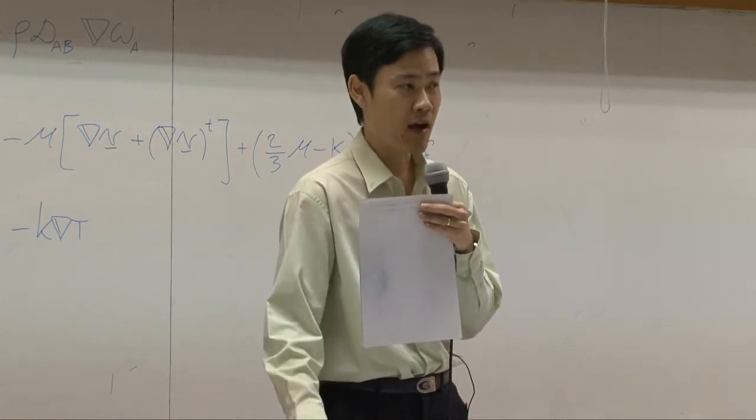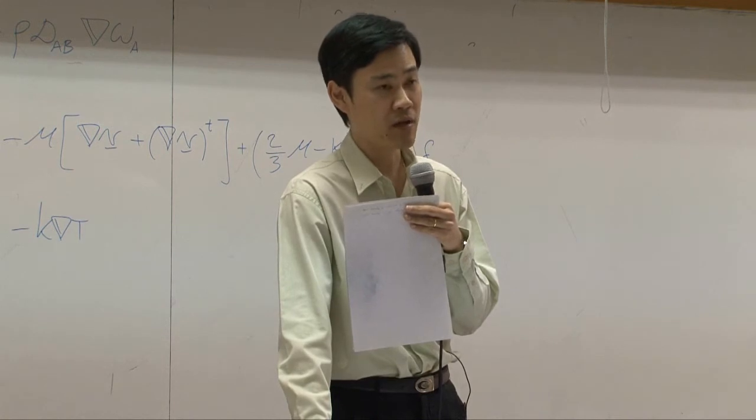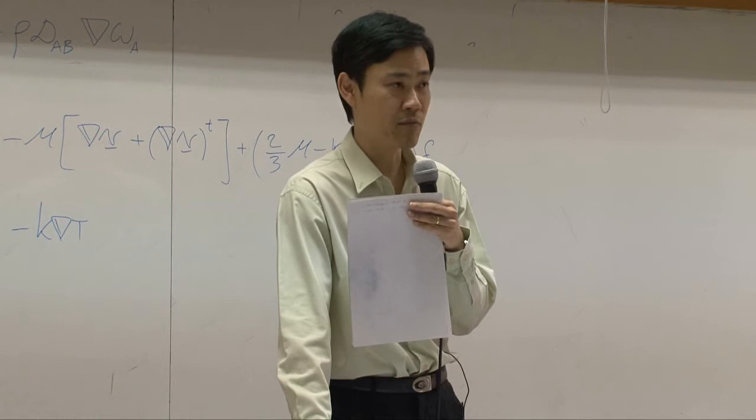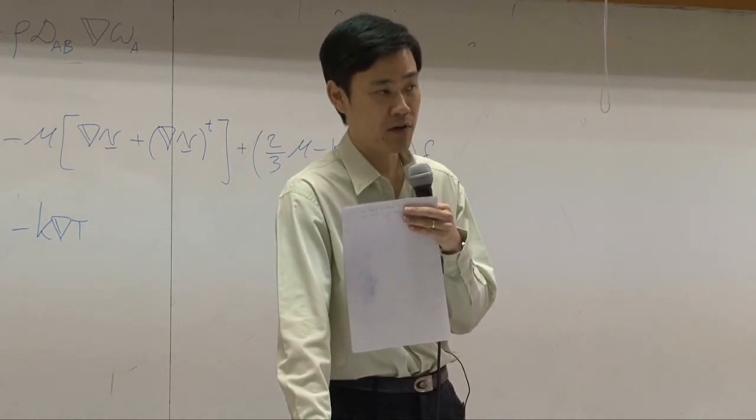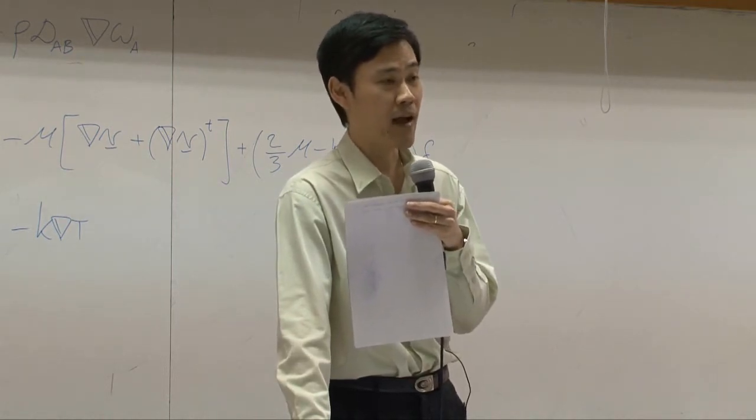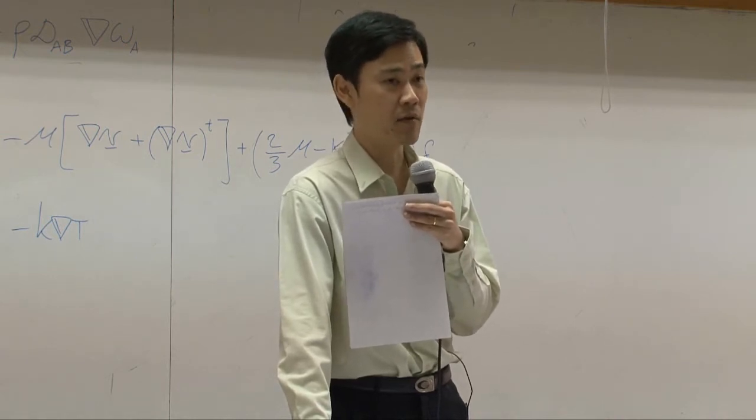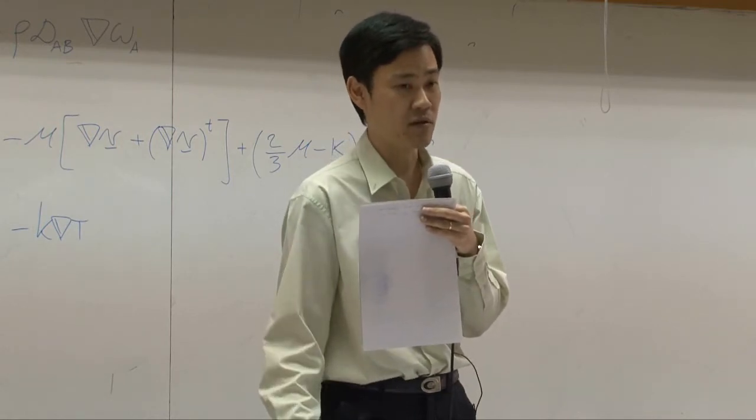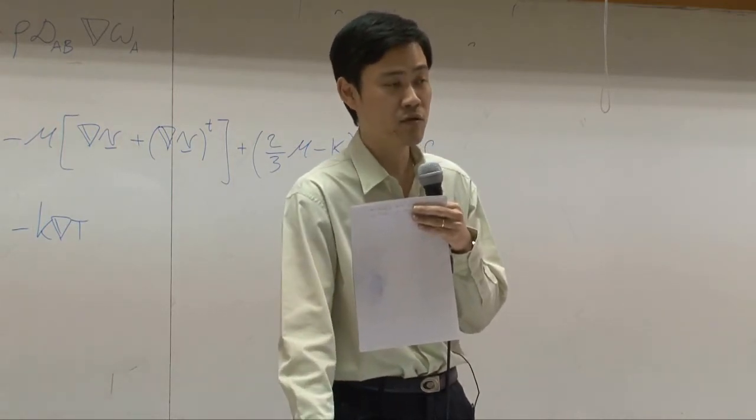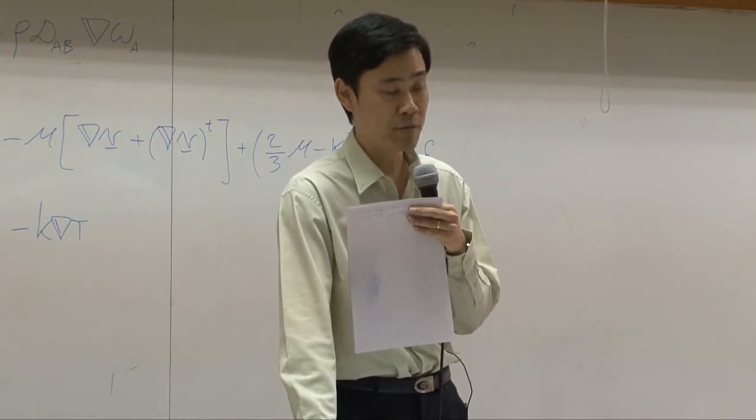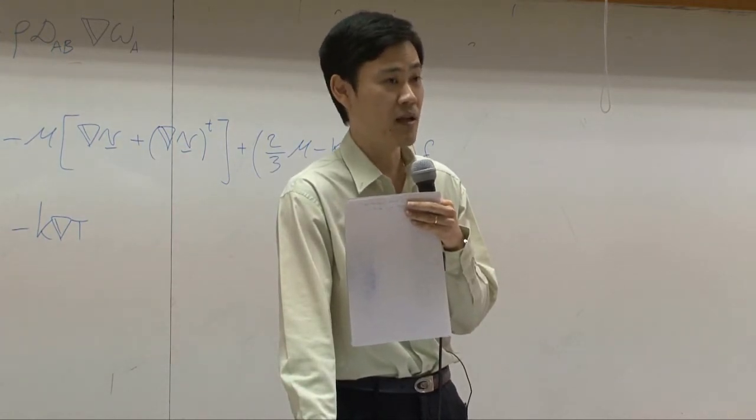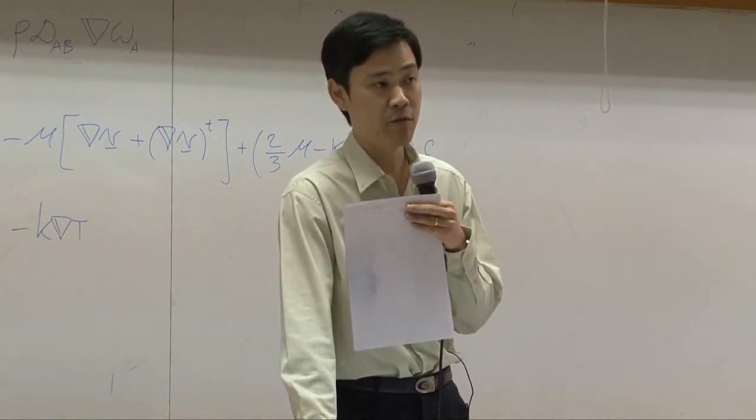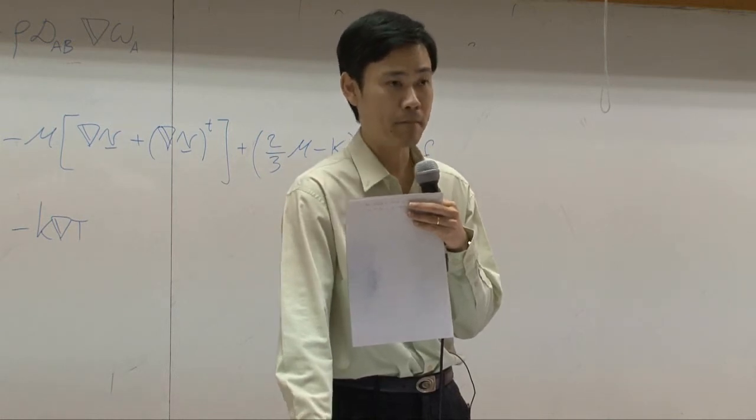Last week, we derived equation of continuity under assumption that the system can contain more than one species. However, during that time, we have not talked about non-isothermal yet. So let's look at this equation, what would happen to equation of motion if we have more than one species in the system? Or what would happen to the equation of continuity if we have more than one species in your system?